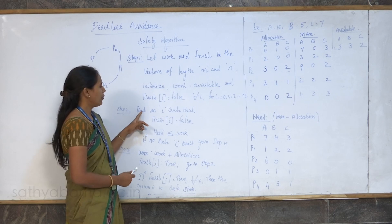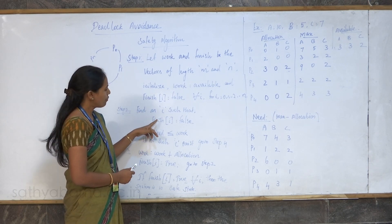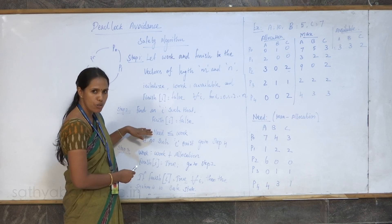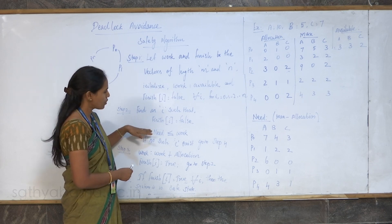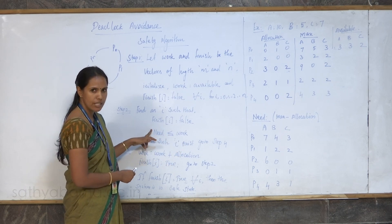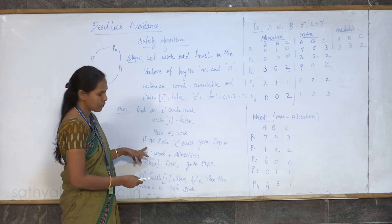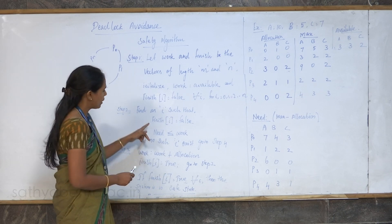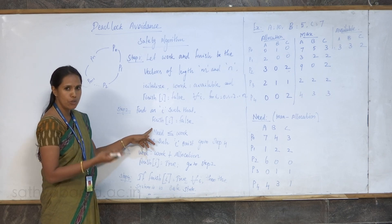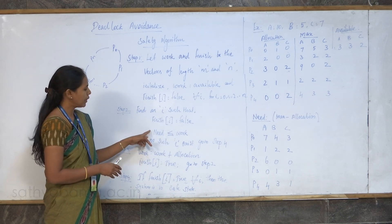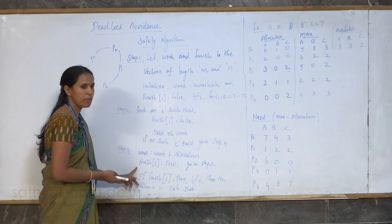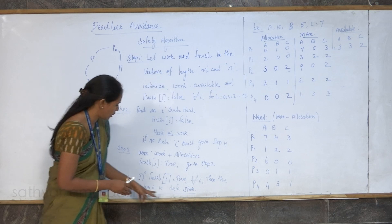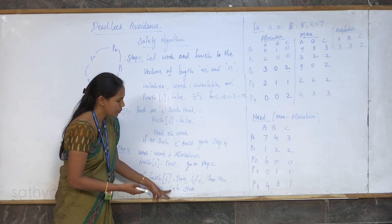In step number two, we take the first process whose Finish of i is equal to false — meaning the process has not started — and we check that the need of that process should be less than or equal to the available resource. If the condition is satisfied, the request is granted. After the completion of the process, the allocated resources are released and added to the existing available resource. If this condition is not satisfied — meaning the requesting resource exceeds the available — we cannot grant the request, and it goes back to step number four. In step number four, if Finish of i is equal to true for all processes, then only we can produce the safe sequence.